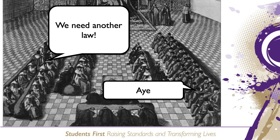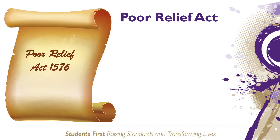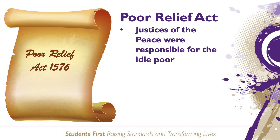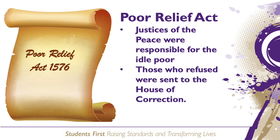The second law the government introduced was the Poor Relief Act of 1576. This act stated that justices of the peace were to provide the idle poor with wool and raw materials to enable them to work by making things to sell. Those who refused to work were sent to a special prison known as the House of Correction. This act was somewhat of an improvement on previous poor laws as it actually offered some support to those in poverty by giving them a means to work.